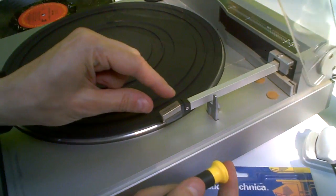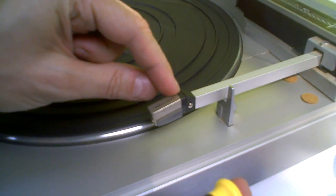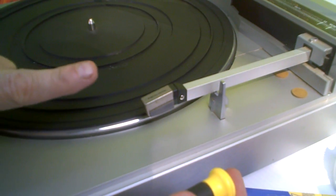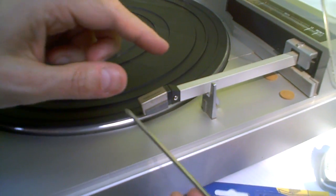We're just going to show you real quick how to replace a P-mount cartridge. This is a P-mount cartridge. It's called that because it plugs directly into the tone arm.